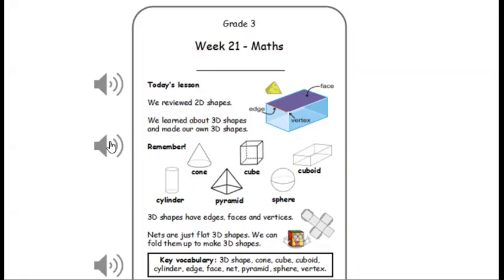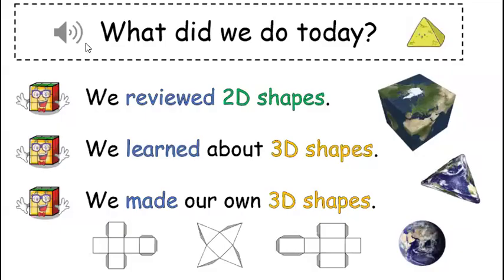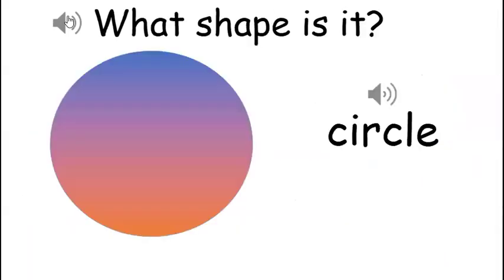Key vocabulary: 3D shape, cone, cube, cuboid, cylinder, edge, face, net, pyramid, sphere, vertex. What did we do today? We reviewed 2D shapes, we learned about 3D shapes, we made our own 3D shapes. What shape is it?